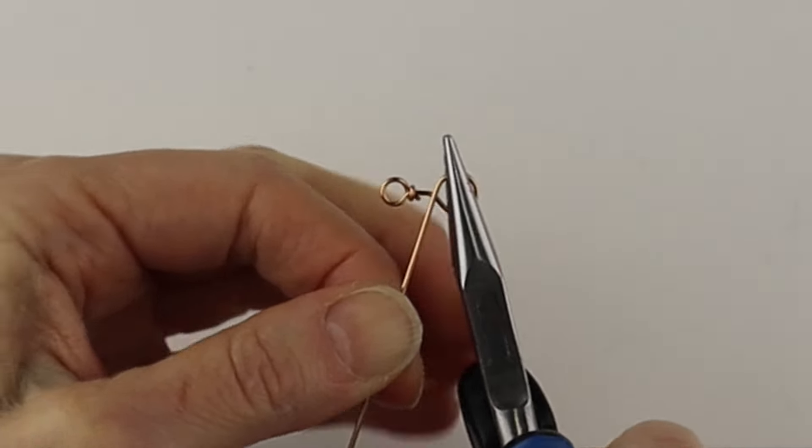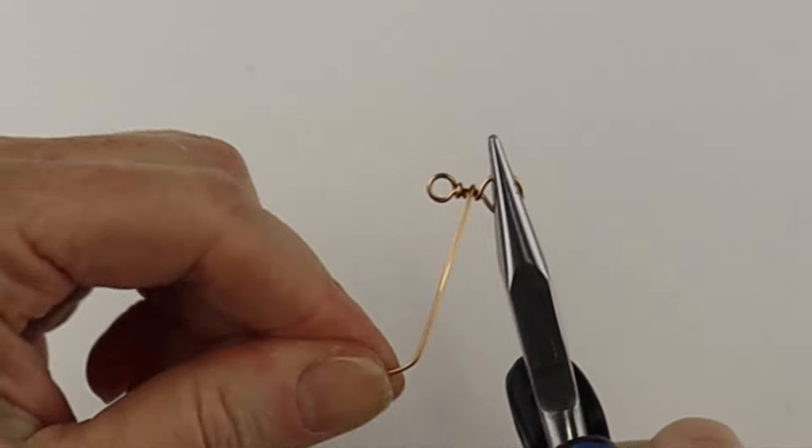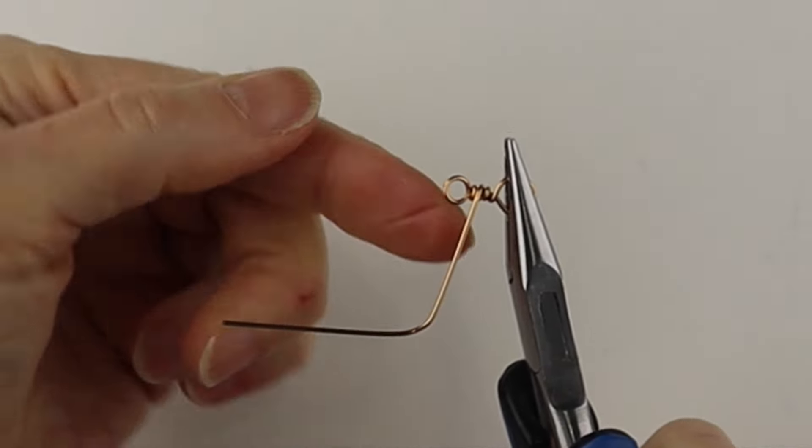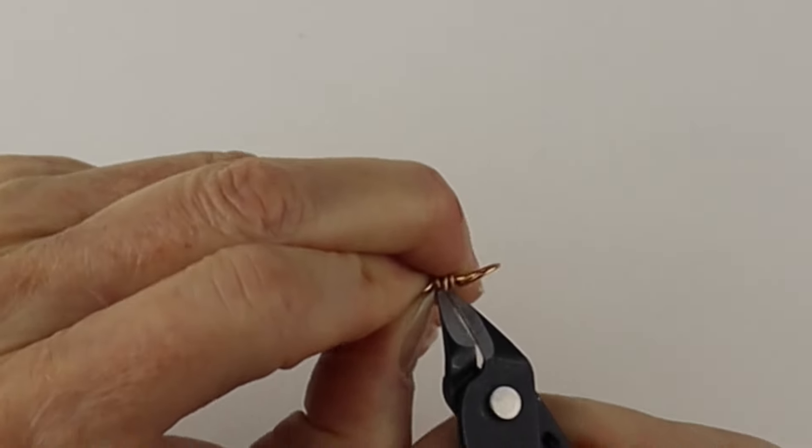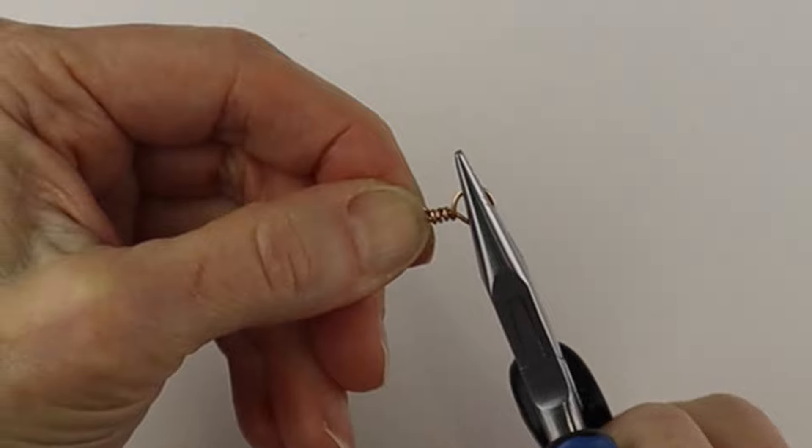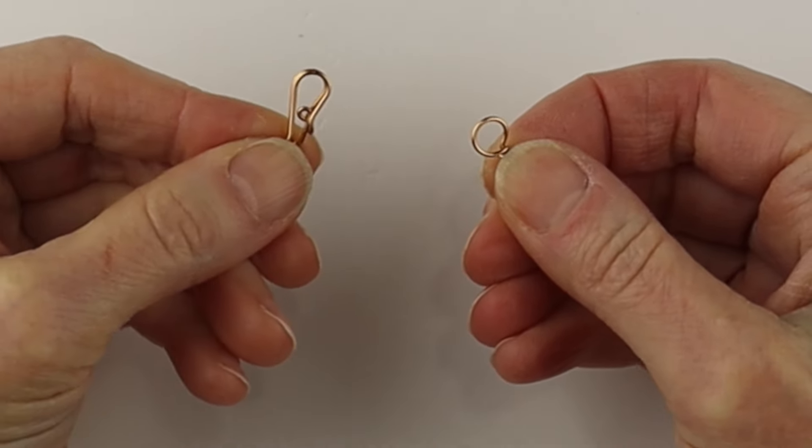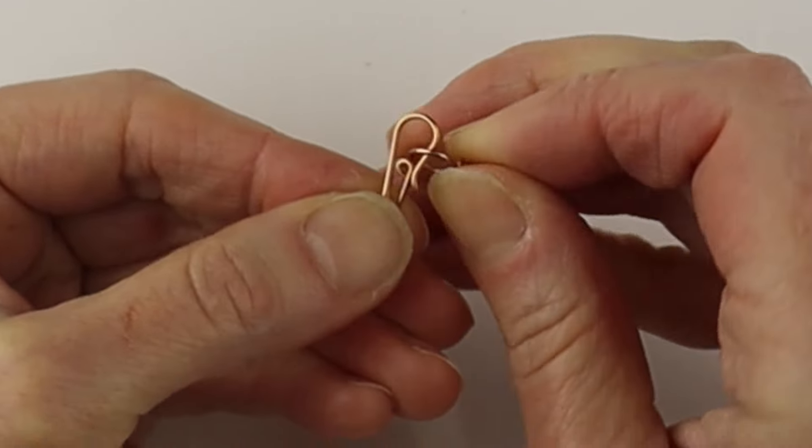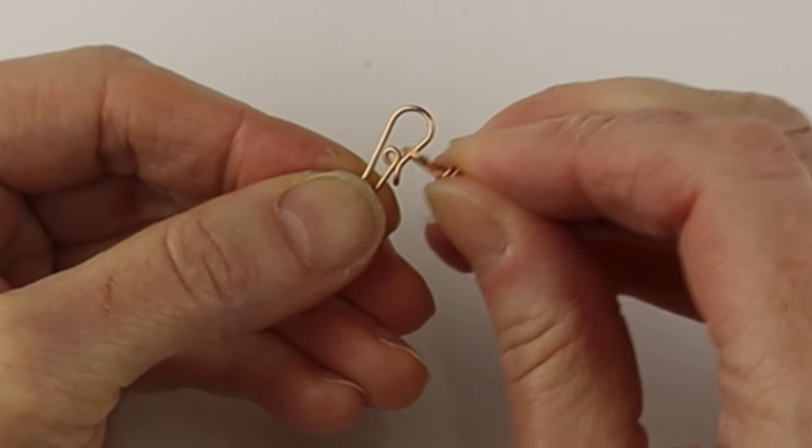Then we're going to hold this with the flat pliers and go around a couple of times until this end matches up with the other end. Then we're going to cut it and pinch it in so those ends meet. When you put it into the clasp, you're going to be able to stick it in there and it snaps closed and it's secure.